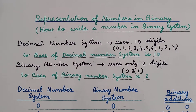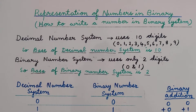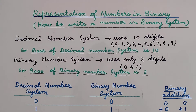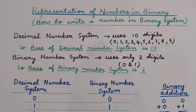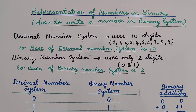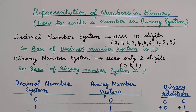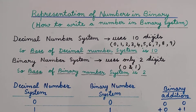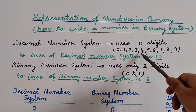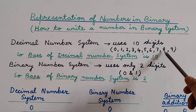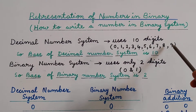In today's lecture we will learn how to represent a number in binary. First, let us try to know what we mean by a decimal number system. The word decimal means 10, so a decimal number system is a number system which uses 10 digits for representation. The 10 digits used are 0, 1, 2, 3, 4, 5, 6, 7, 8, and 9, and the remaining numbers are repetitions of these digits.